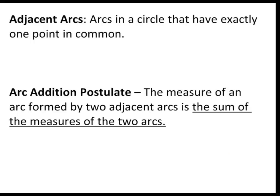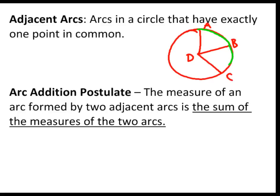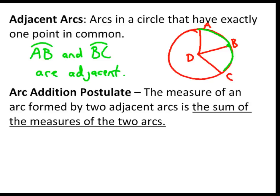Adjacent arcs are two arcs that have only one point in common. Arc AB and arc BC are adjacent to each other because those two arcs share only point B. This brings us to the arc addition postulate: the measure of any arc formed by two adjacent arcs is the sum of the measures of those two arcs. So the measure of arc AC equals the measure of arc AB plus the measure of arc BC.